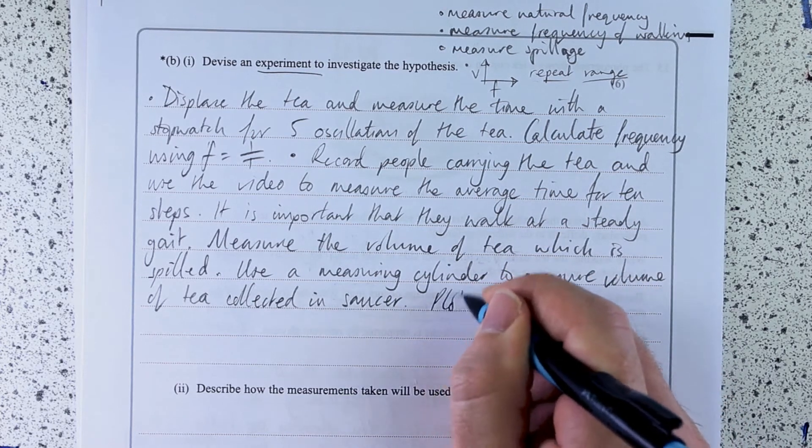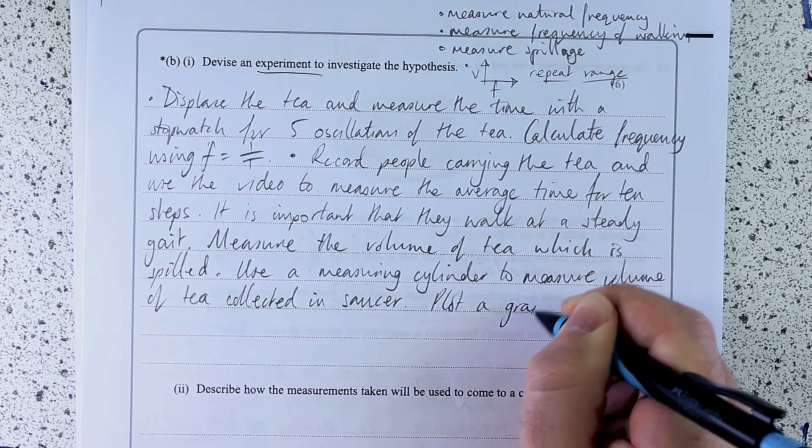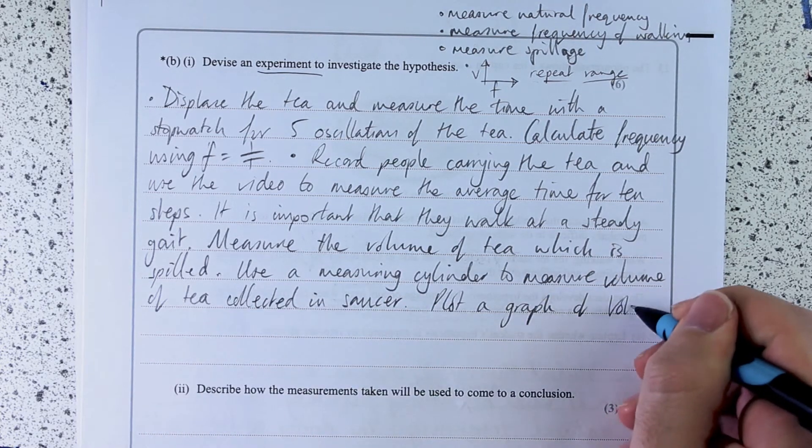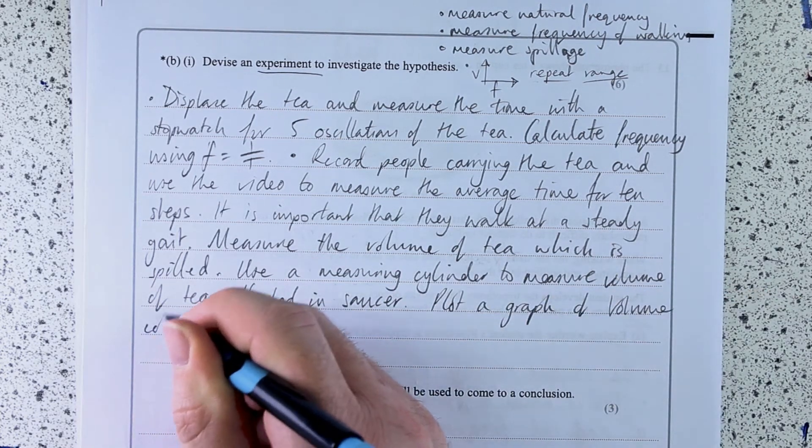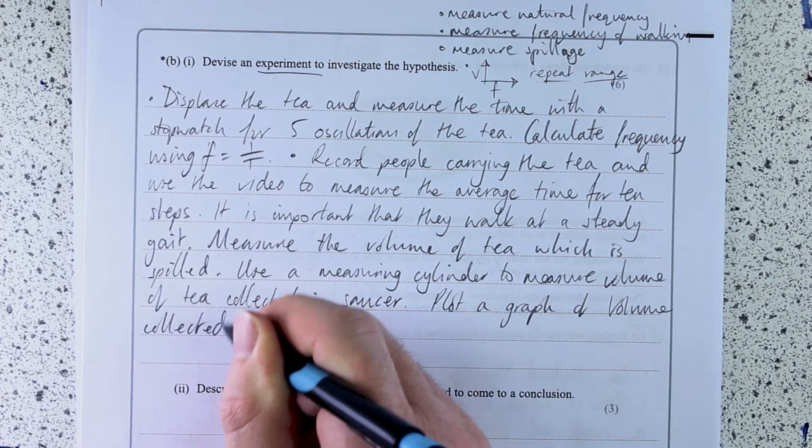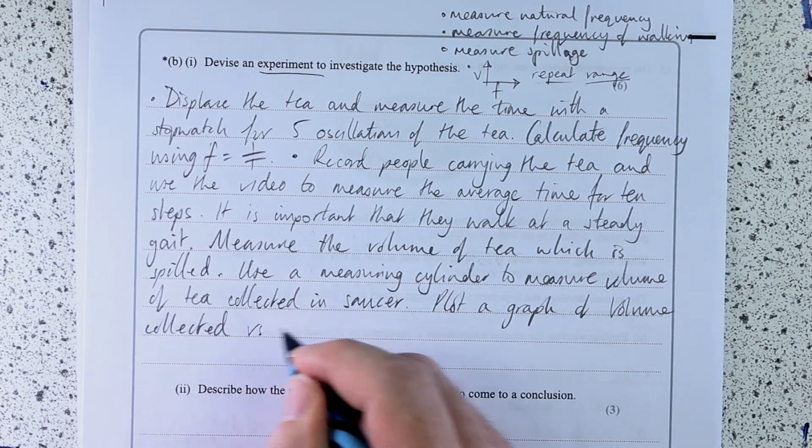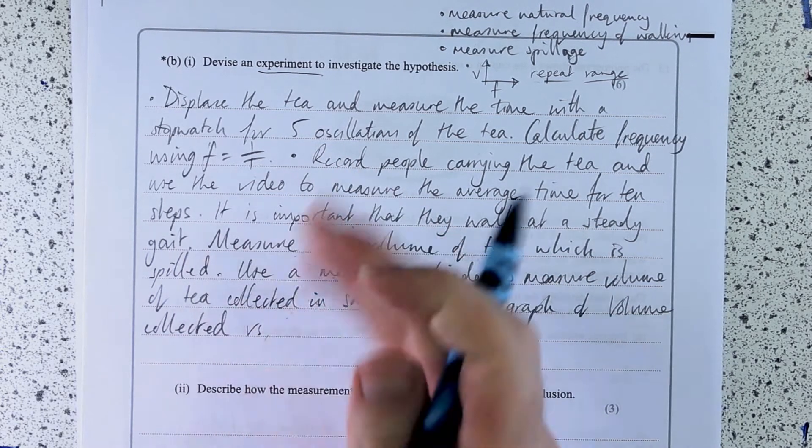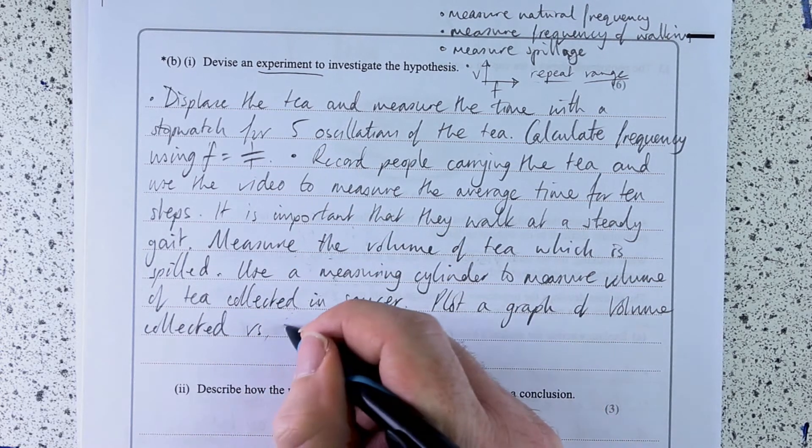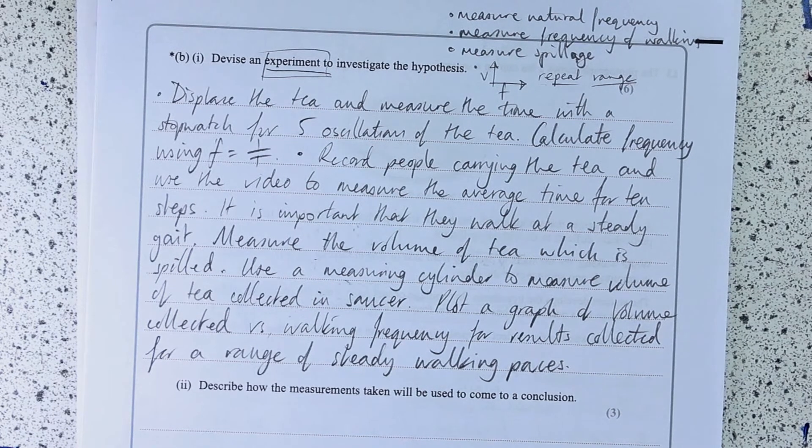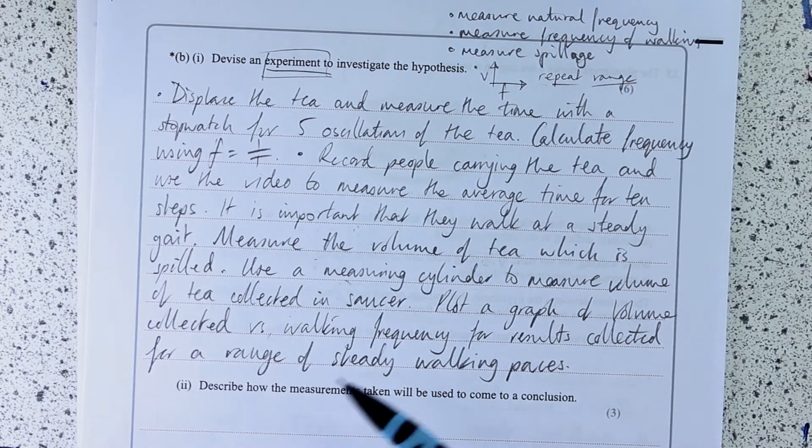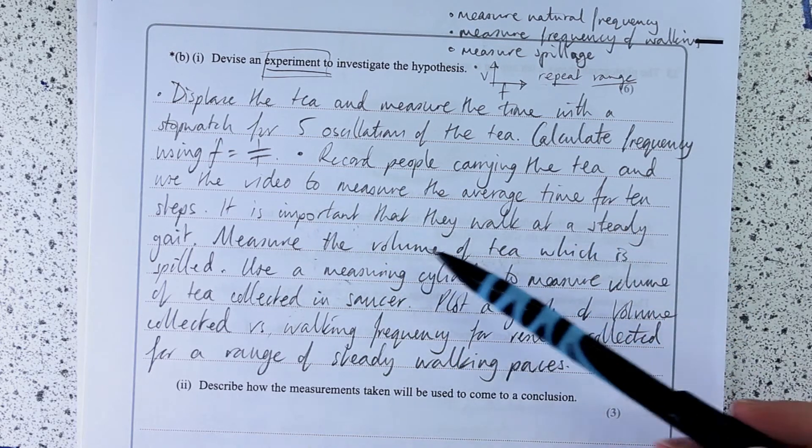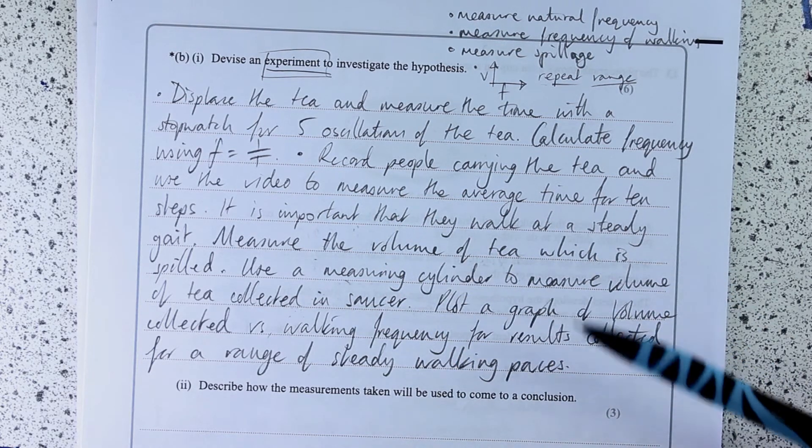So I'm going to say plot a graph of volume collected versus walking frequency. I've got an experiment there. I've got a range. I've got a graph. I've got an independent variable, my walking pace. I've got my dependent variable, my volume of tea, and I've said how to measure them all.